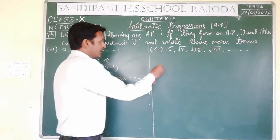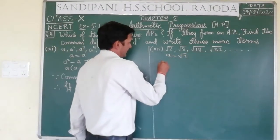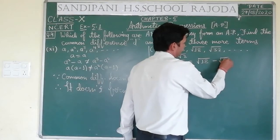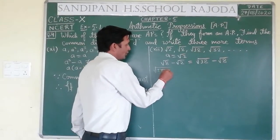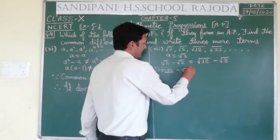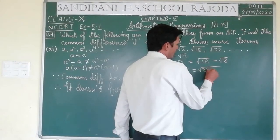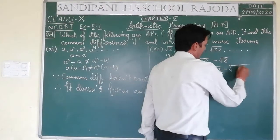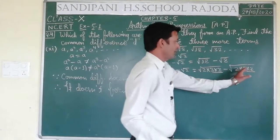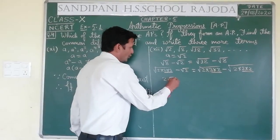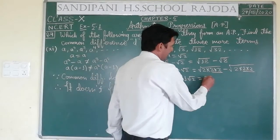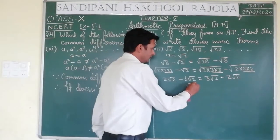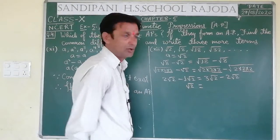Now question 12: first term is √2. We subtract √2 from √8 and √8 from √18. √8 = 2√2, so 2√2 − √2 = √2. √18 = 3√2, so 3√2 − 2√2 = √2. Both differences are equal, so common difference exists.